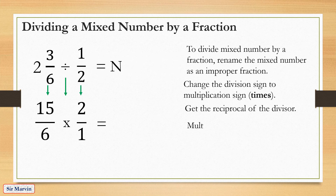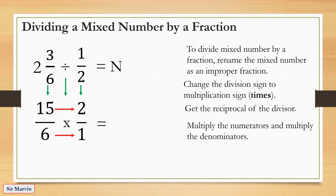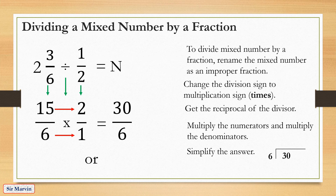Proceed to multiplication: multiply the numerators and denominators. 15 times 2 equals 30, and 6 times 1 equals 6. Since 30 over 6 is an improper fraction, divide: 30 divided by 6 equals 5. Since there is no remainder, the final answer is a whole number — 30 over 6 equals 5.